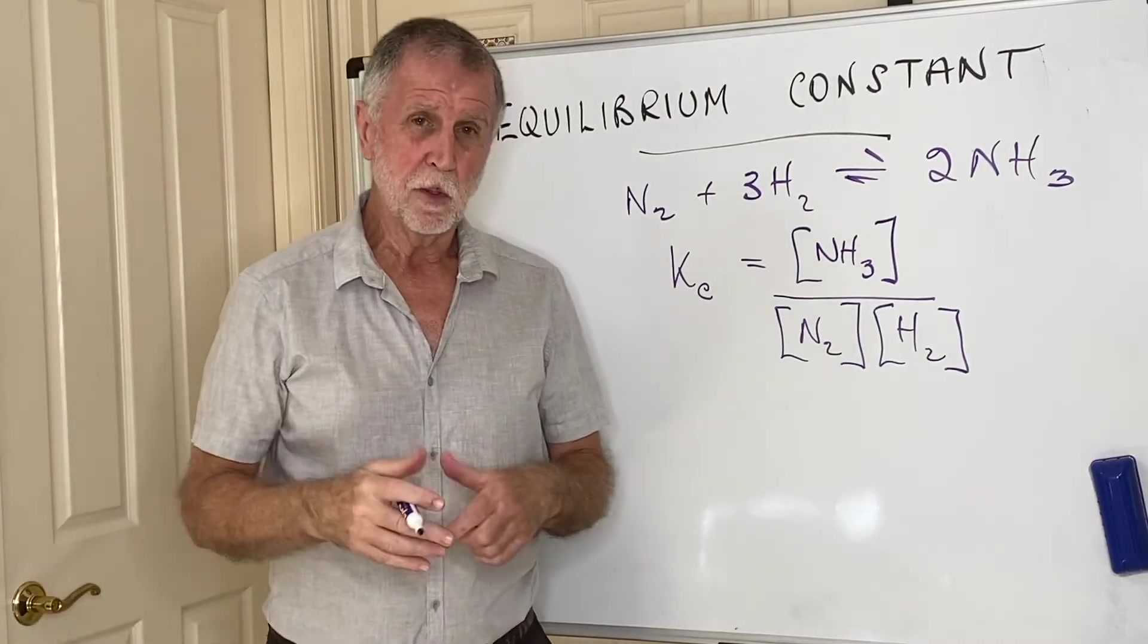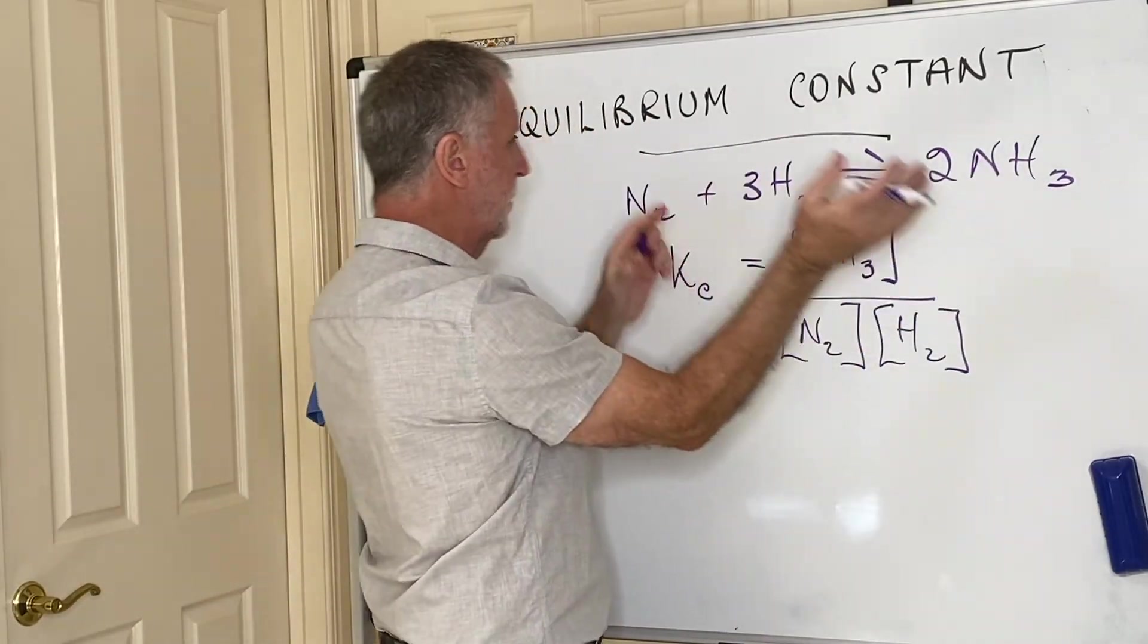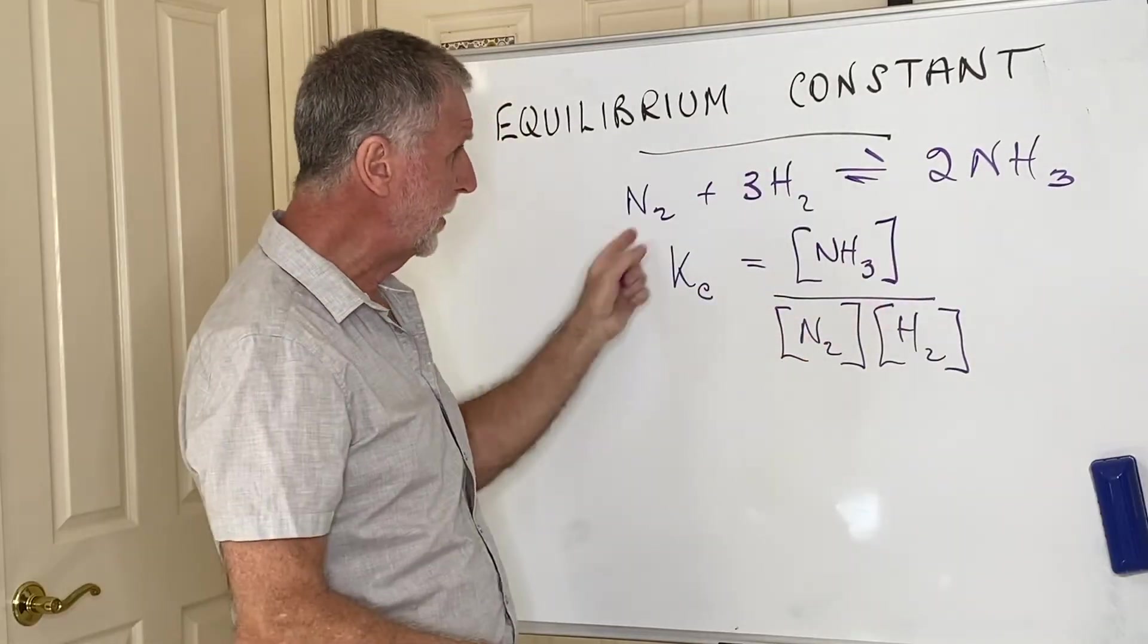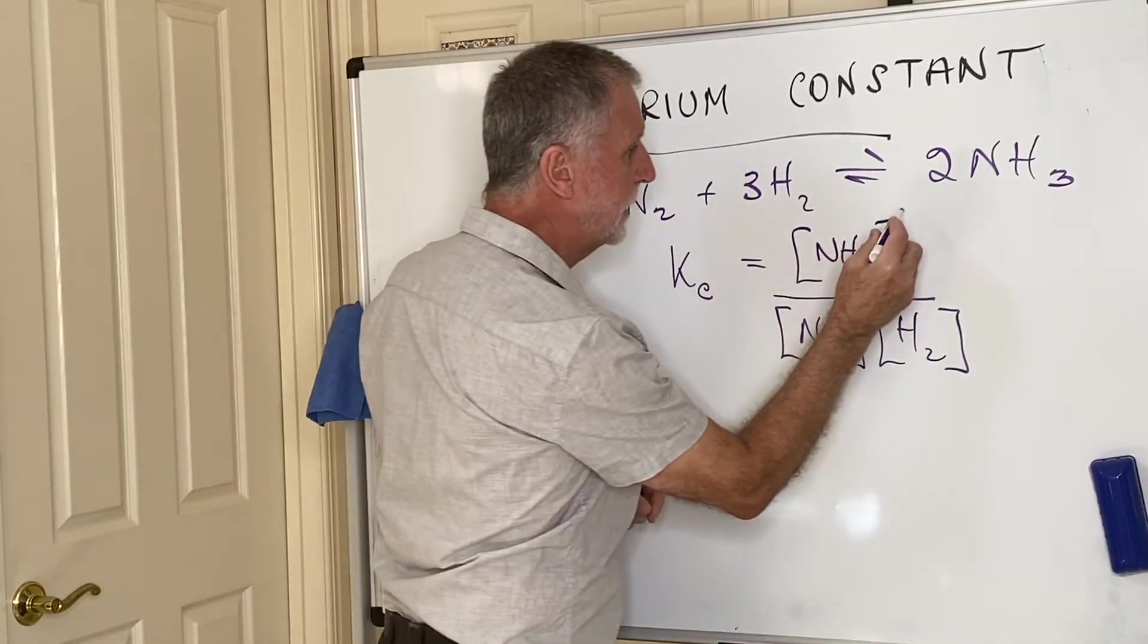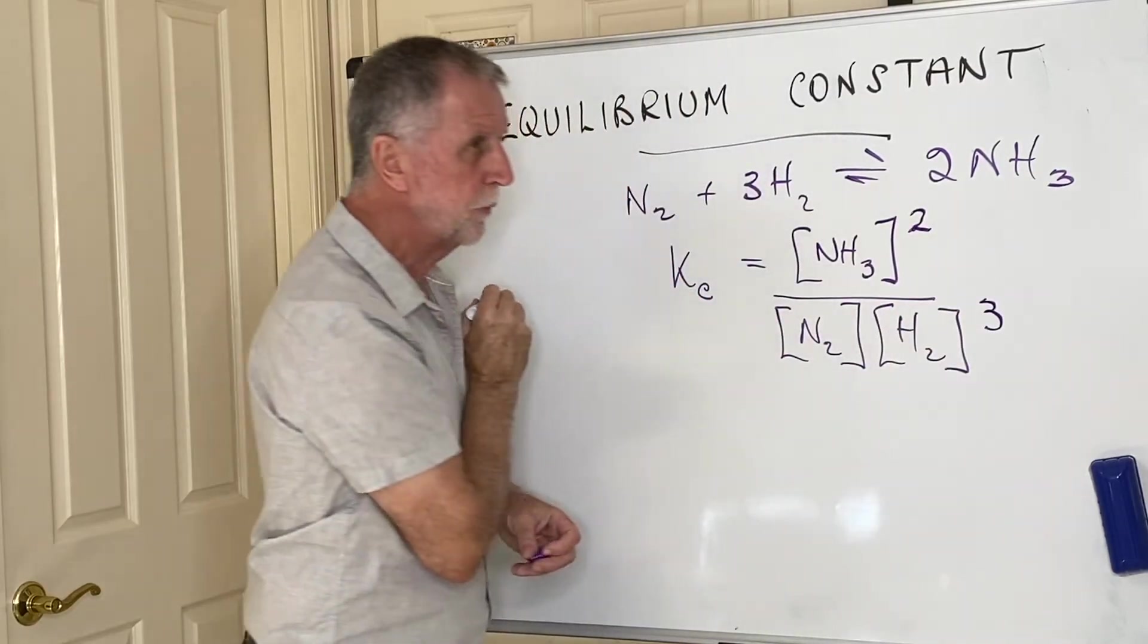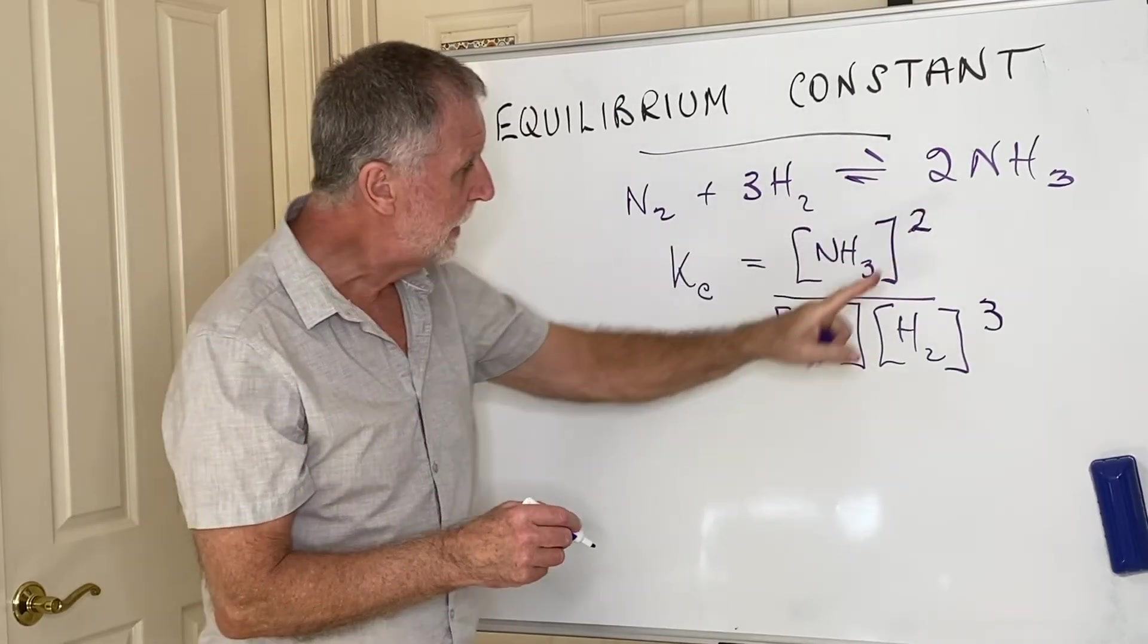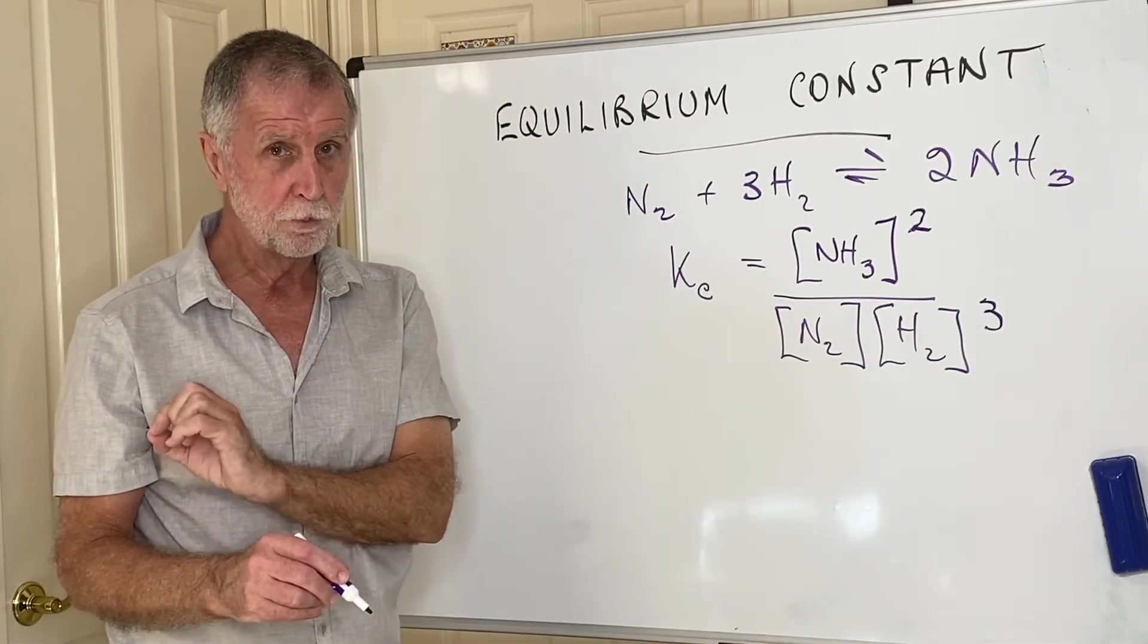So many, many experiments were done by Le Chatelier on this, and in order to get a constant value when you started with various amounts of these, whether you started with reactants or products, he only got a constant value if he put a square there and a cube there. And clearly what works here is these stoichiometric coefficients, these numbers that we use for balancing the equation, need to then turn into powers of their concentrations in order for K to give you a constant value.